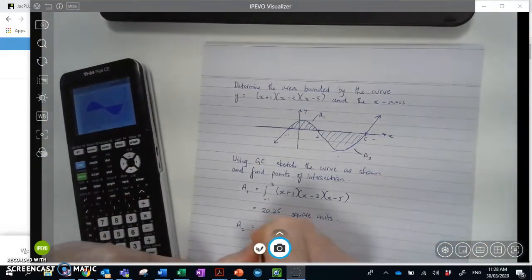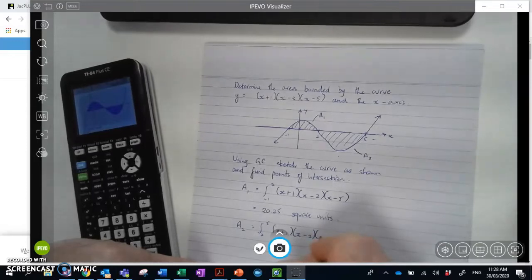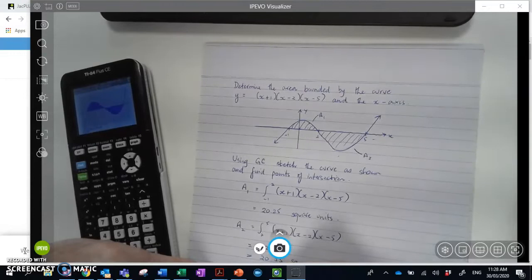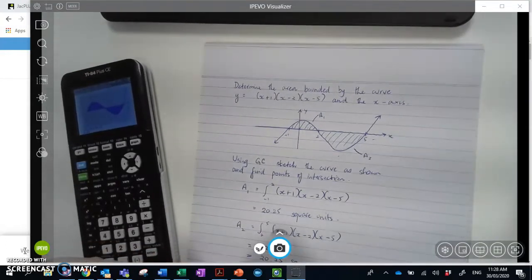So we can say area 2 is the integral from 2 to 5 of the same equation. So effectively, by going from this line to this line, you're acknowledging that you've got an area that will in fact be positive.